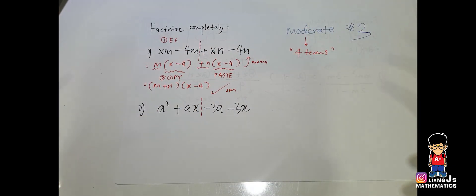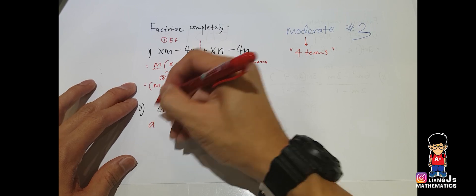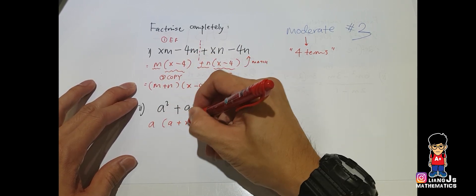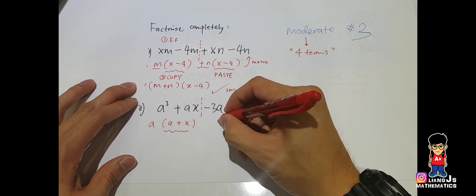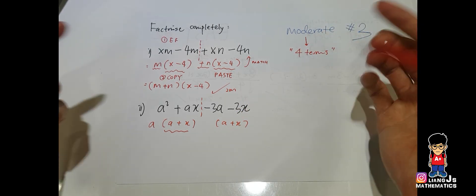a squared plus ax repeated on a, you left a plus x. Copy and paste. Can you see that? Because some of you might say, hey, if I apply easy factorization it becomes a minus x, right? So that's the point where I say you have to copy and paste.